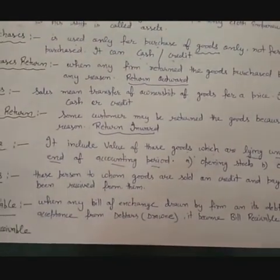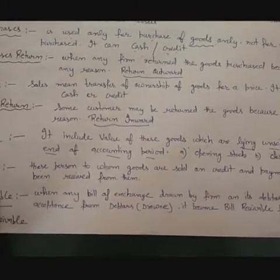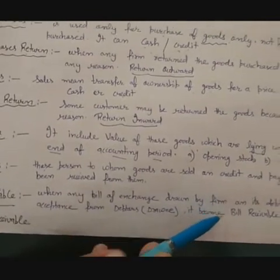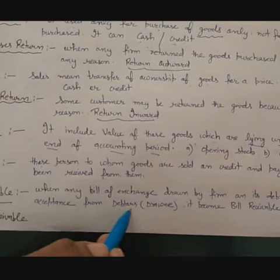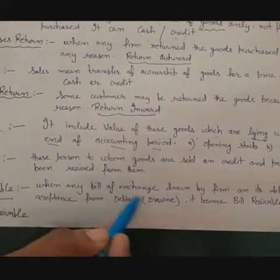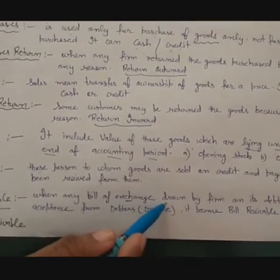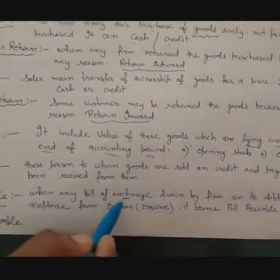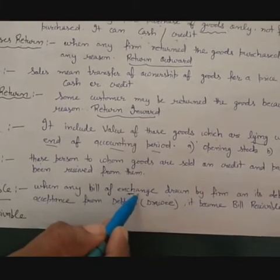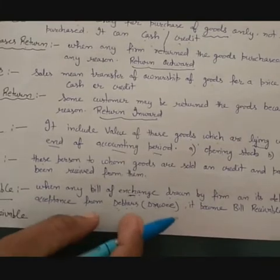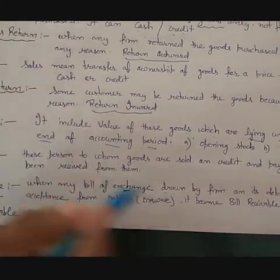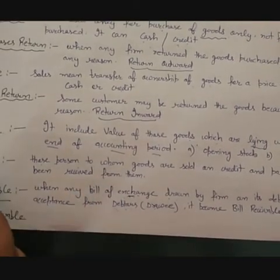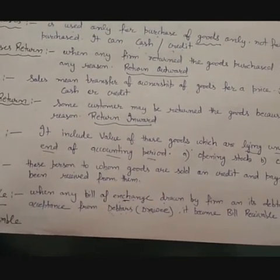Related to debtor is the term Bills Receivable. Sometimes, we get the debtor to accept a Bill of Exchange, promising to pay in two or three months. That Bill of Exchange can also be transferred to someone else if we need to make a payment. So this Bill of Exchange is known as a Bill Receivable for the firm, because the firm has to receive money in exchange for that bill. Collectively, debtors and bills receivable are known as Trade Receivable.